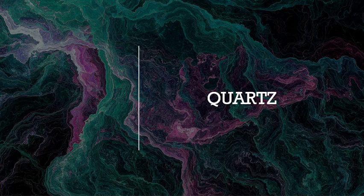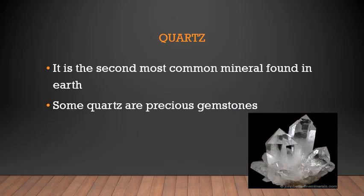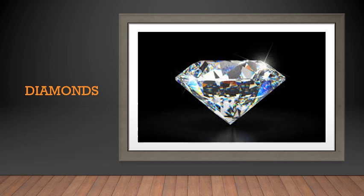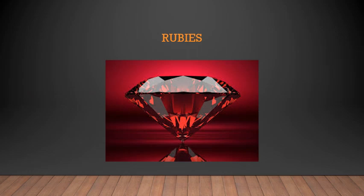That brings us to the next part of the lesson: quartz. I will be reading from page number 116 — if you have your textbooks, please follow. Quartz is the second most common mineral found on earth. There are many kinds of quartz. Some quartz are precious stones. Quartz can be available in different forms like amethyst — you can see the picture on screen and in your textbook. Then diamonds and rubies are also forms of quartz.